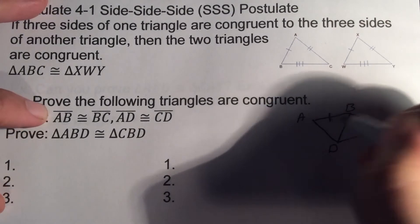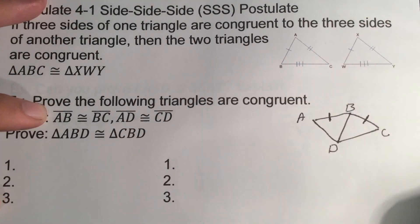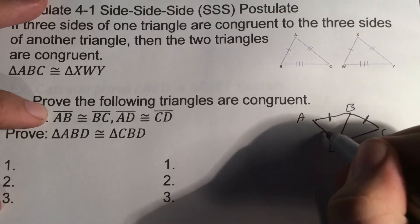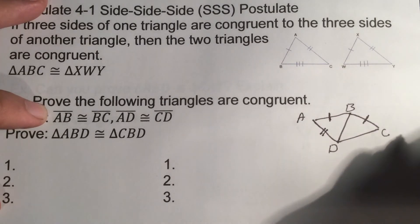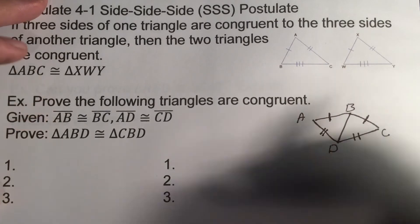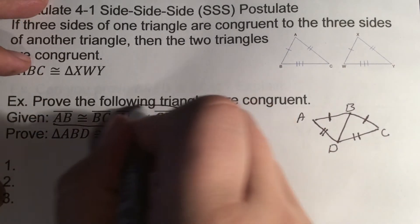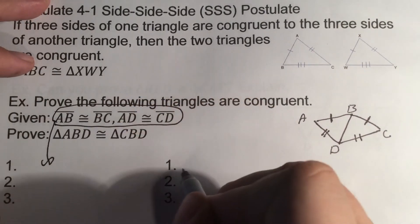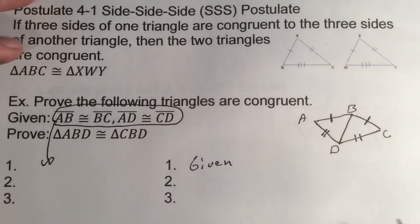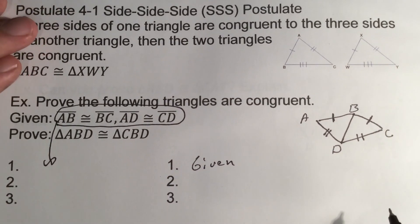They're sharing side BD on both, which is going to be nice for what we're doing. AB, we're going to mark this, is congruent to BC. We're also given that AD is congruent to CD. So right now, we're given two sides congruent. Obviously, with just doing side-side-side, that's what we're working towards. But if you have two sets of sides congruent, look and see if you can find that third set of sides congruent. Then we can prove the triangles are congruent.